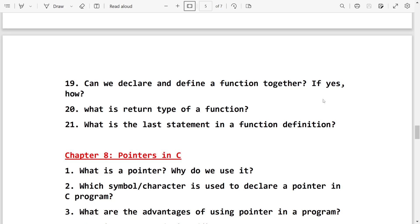After that, you can write this one. You will declare a function, after that put the bracket and write the definition together. So this way you can write the explanation part. After that, what is return type of a function. Every function returns some values to the caller function, so this is known as return type of the function.